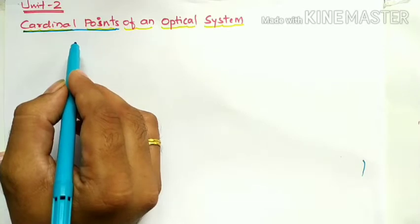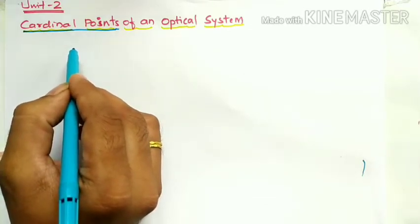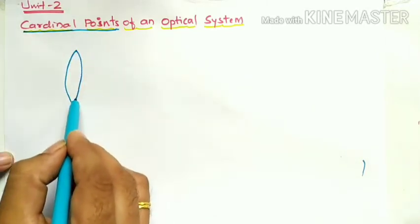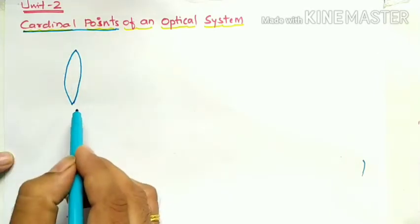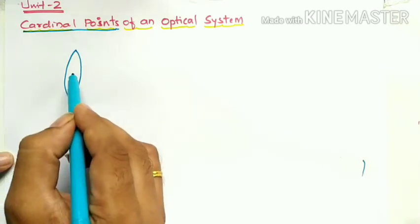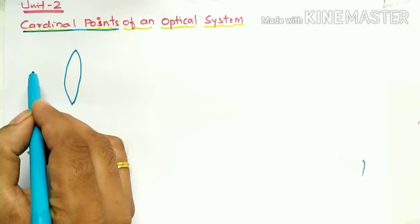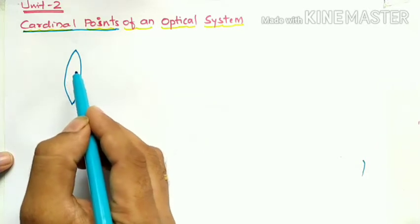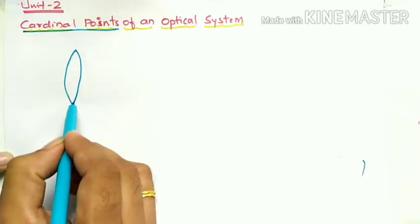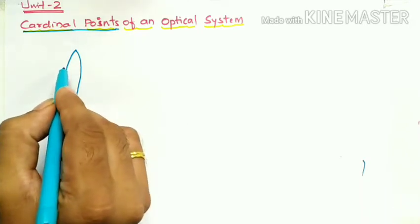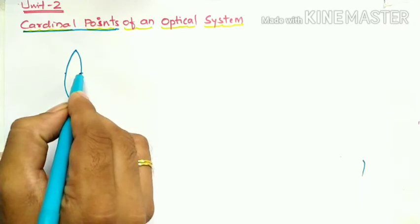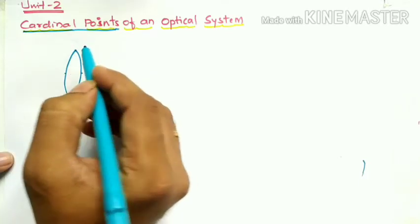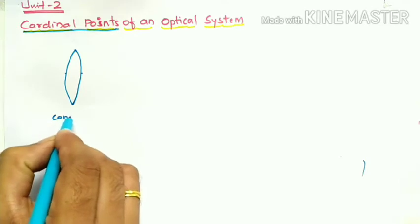A lens is an optical medium bounded by two spherical surfaces. Here this is one spherical surface and this is another spherical surface — these two spherical surfaces bounded together make up a lens. A lens which is thick at the middle and thin at its edges is called a convex lens. Here in the middle it is thick and at the edge it is thin, so this type of lens is called a convex lens.